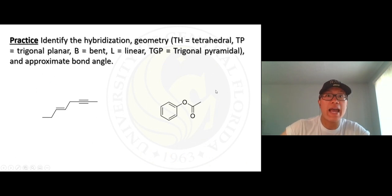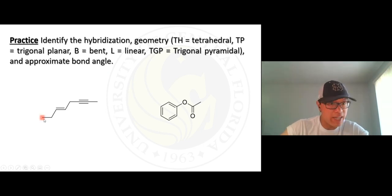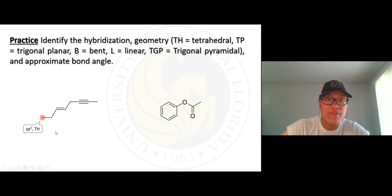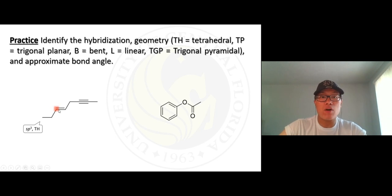One more time — do the bond line structure and identify the hybridization and geometry: tetrahedral, trigonal planar, bent, linear, or trigonal pyramidal, and the approximate bond angle. First one: carbon with one bond and three hydrogens — sp3, tetrahedral, 109.5 degrees. Next, this one has one bond, a double bond, and one hydrogen — three things around it, so sp2. The other p orbital forms a pi bond.